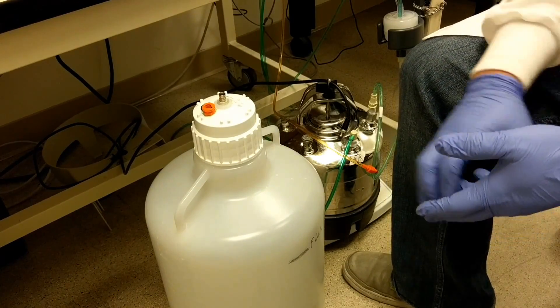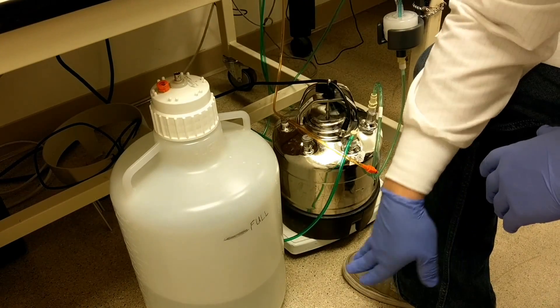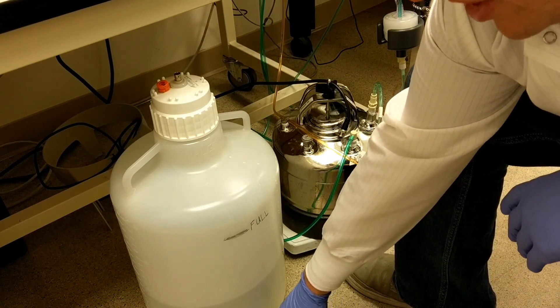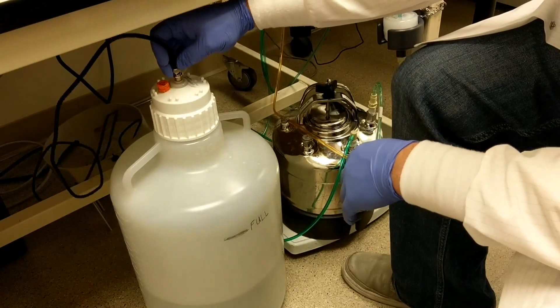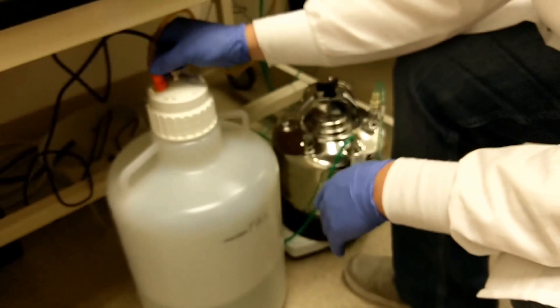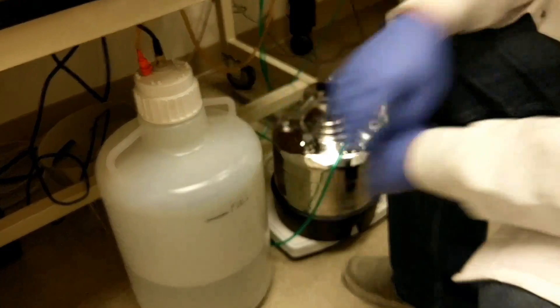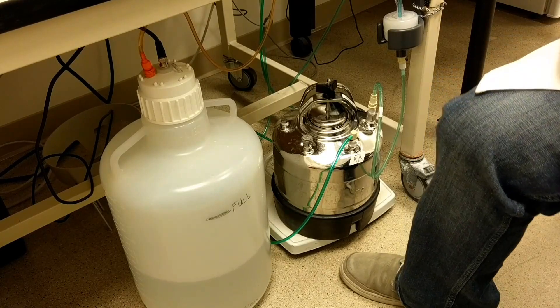When you empty it, under the sink will be a bottle of concentrated bleach that you can fill to this line. Once you've done that, you can reconnect your electronic sensor and your waistline. Make sure that snaps into place, and now you've successfully emptied the waste tank.